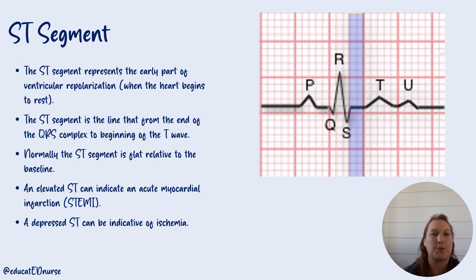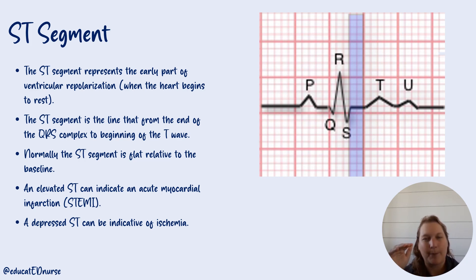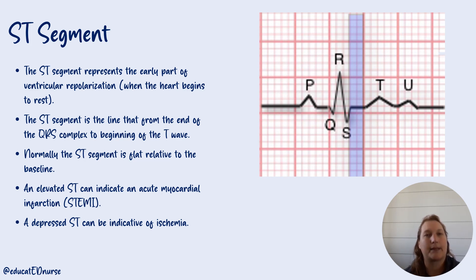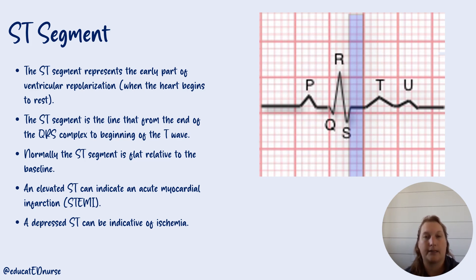The ST segment is the early part of ventricular repolarization — the heart should be at rest at this point. If we see any elevation, we would think about a heart attack. We could also see depression of the ST segment below baseline, which can be a sign of ischemia. Either way, not good. Normally the ST segment is flat at baseline. When you see it as high as the middle of the QRS complex, you should automatically be thinking some sort of cardiac event is happening and need to investigate further with serial EKGs or labs.